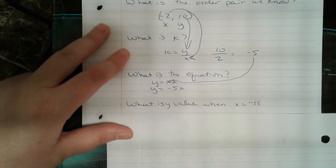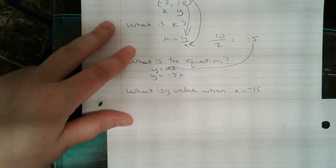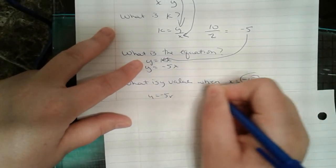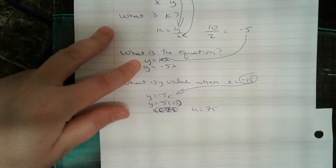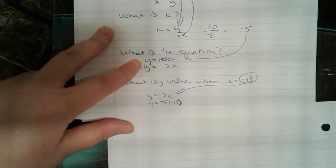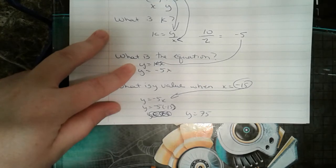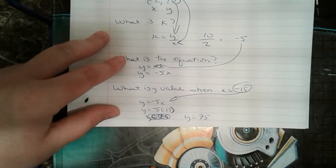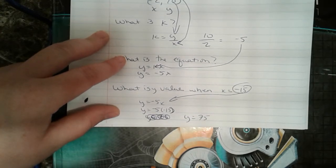Our next part is: what is the y value when x is negative 15? I plug negative 15 in for x, giving y equals negative 5 times negative 15. We get y equals 75, because a negative times a negative is a positive, and 5 times 15 is 75.